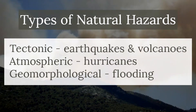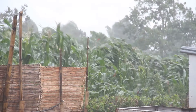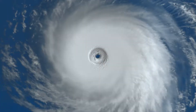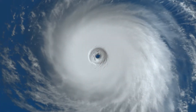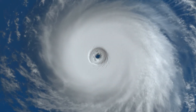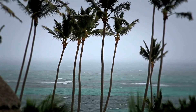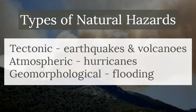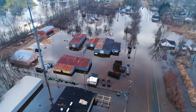The next category is atmospheric hazards. We're going to be specifically looking at hurricanes, including a case study for a hurricane later on in this series. You need to know the effects and the responses to these extreme events. The last one is geomorphological hazards, which includes flooding, and we're going to look at a flooding example later on.